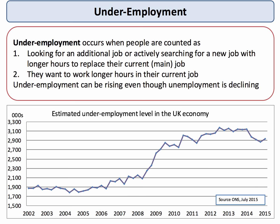Since then underemployment has fallen — it's now just over 2.9 million as of 2015 — but that's significantly above where it was a few years back, and it has stayed high despite the fact that unemployment has fallen from 8% down to about 5% of the labour force. So if you get a question on unemployment, keep in mind that according to current estimates there's nearly 3 million people in the UK who are categorized as underemployed.